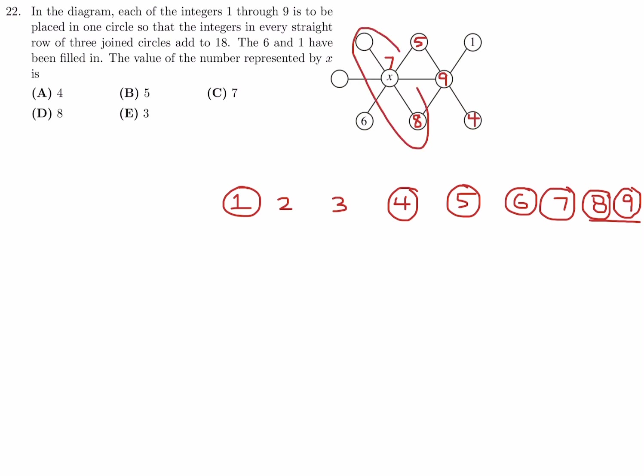To complete the puzzle: the remaining row must add to 18, which requires a 3, and then placing the 2 in the last spot — it works. Everything matches up. Number 22, the answer is 7, which is choice C.